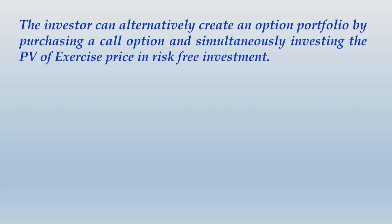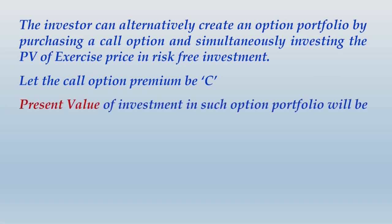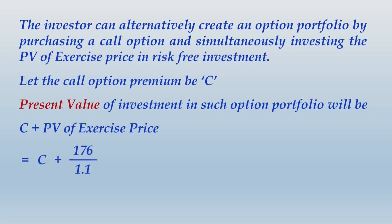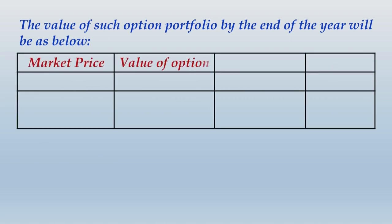Logically, as per portfolio replication model, the investor can simply create a stock portfolio by purchasing an equity share at the prevailing market price of rupees 165. The present value of investment under the stock portfolio will be rupees 165. The value of this stock portfolio by year end can be either: rupees 152 if lower probable price prevails, or rupees 200 if higher probable price prevails. Alternatively, the investor can create an option portfolio by purchasing a call option and simultaneously investing the PV of the exercise price in risk-free investment. Let the call option premium be c.